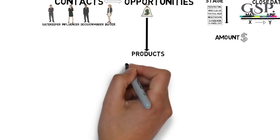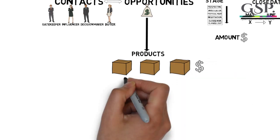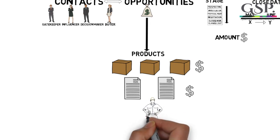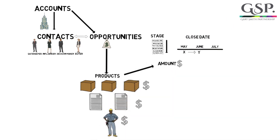Remember, products can be physical things, but they also can be intangible items, subscriptions, fees or services that you deliver through people. In fact, a product is anything that generates revenue for you via an opportunity. When you add products to an opportunity, the total value of these products becomes the amount on the opportunity.